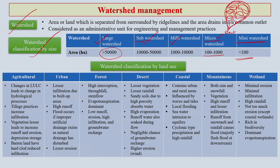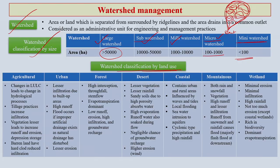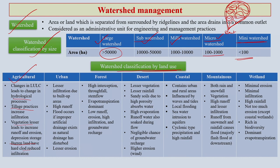Watershed classification can also be done on the basis of land use. First, agricultural: based on agricultural land use we can have a type of watershed class. This kind of watershed is basically regulated or controlled by different hydrological processes, tillage practices, vegetation cover, type of crops being grown, barren land with no crops. So different agricultural and cropping practices are the regulating factors of watersheds classified under agricultural operation.